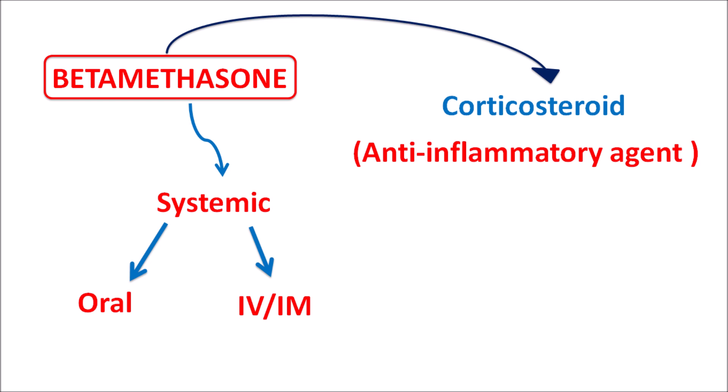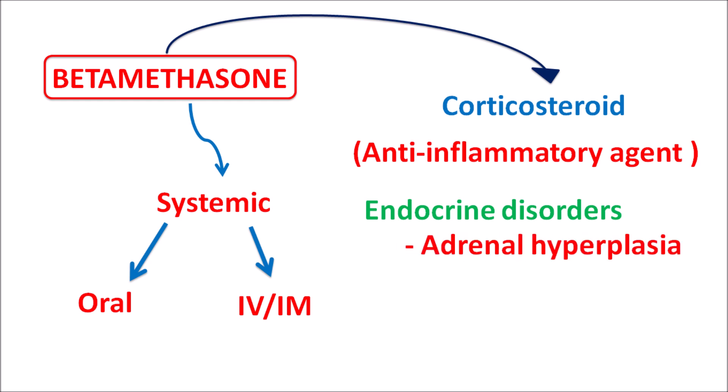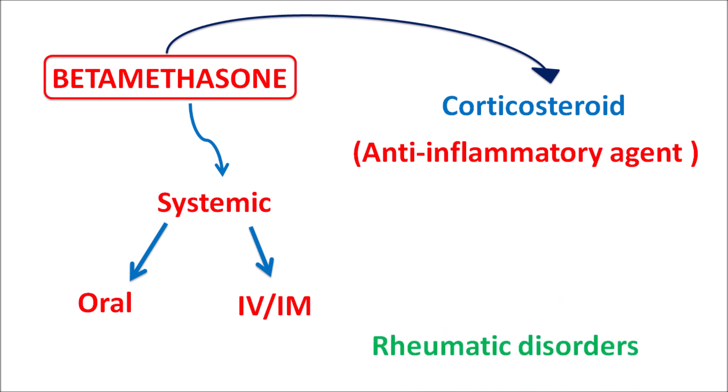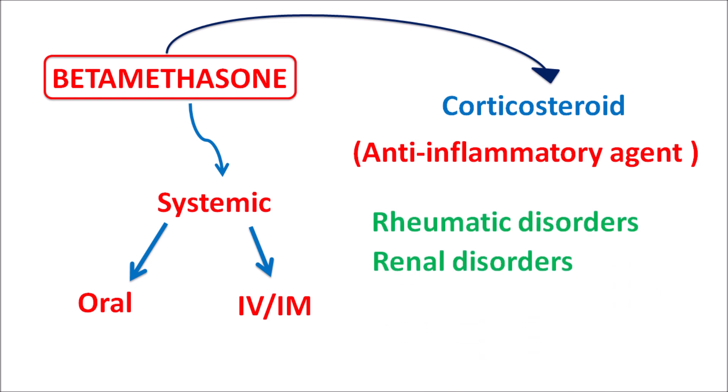It can be used for systemic disorders associated with inflammation — for instance, endocrine disorders such as adrenal hyperplasia, gastrointestinal disorders such as ulcerative colitis, rheumatic disorders, renal disorders, and respiratory disorders. Many systemic disorders associated with inflammatory conditions can be treated by betamethasone.